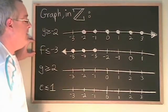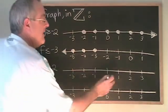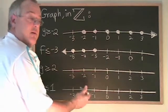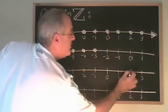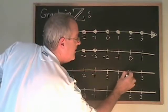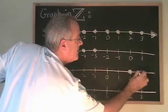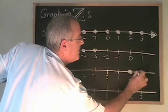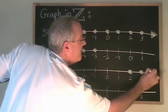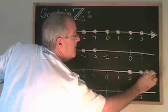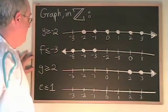G greater than or equal to 2 looks the same as it would if graphed within natural numbers. 2 is part of the answer, 3 is part of the answer, and on and on forever in the positive direction.